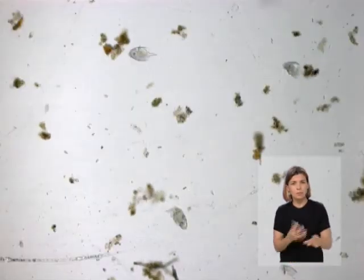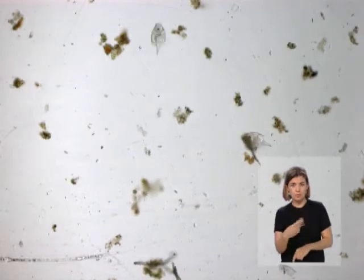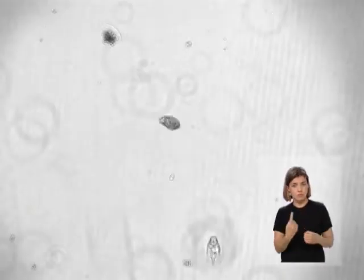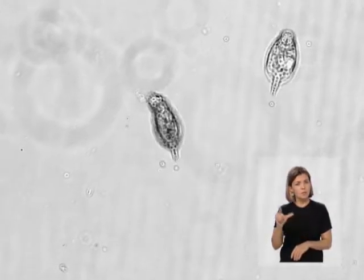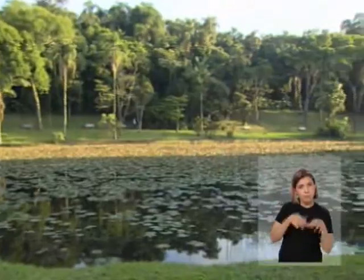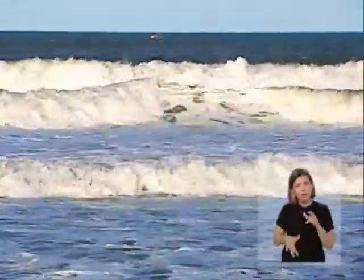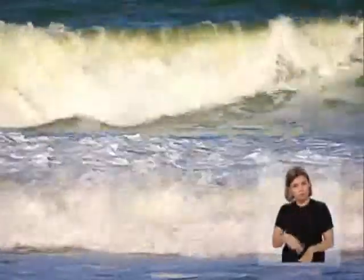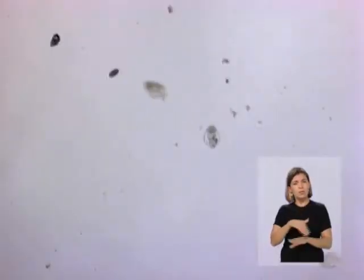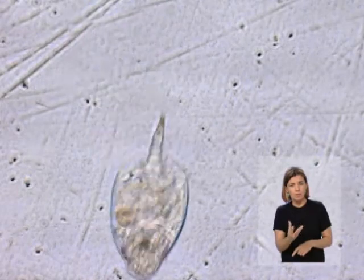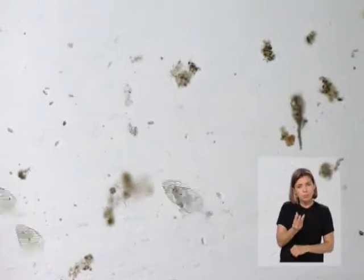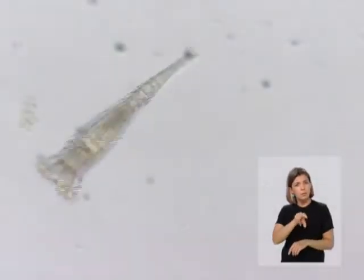A locomoção por cílios também é uma característica dos seres microscópicos multicelulares conhecidos como rotíferos. Eles são animais minúsculos que vivem em lagos, poças d'água, mares e em locais úmidos no ambiente terrestre, e que também podem transitar pelo ambiente aquático usando seus cílios. Mas para os rotíferos, os cílios não servem só como meio de transporte — eles também funcionam como uma ótima ferramenta para capturar alimento.